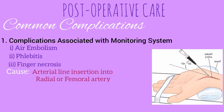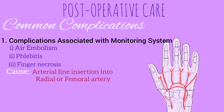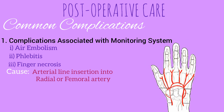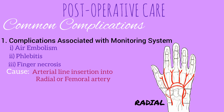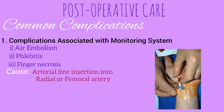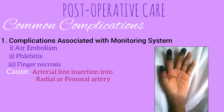Finger necrosis is another complication associated with the monitoring system. It can result from arterial line insertion into the radial or femoral artery. In a normal individual, the hand is supplied by blood from both the ulnar and radial arteries, but a minority of people lack this dual blood supply and their hand is predominantly supplied by the radial artery. In such individuals, radial artery cannulation may disrupt the blood supply to the hand, causing ischemic necrosis of the fingers.